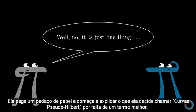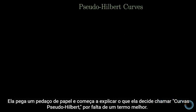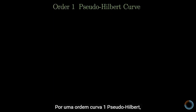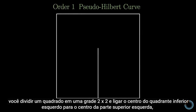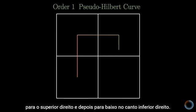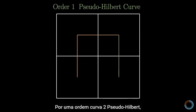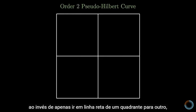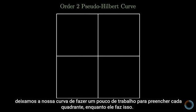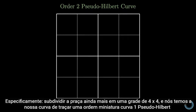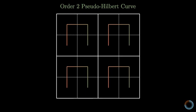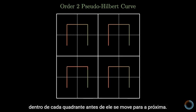She pulls out a piece of paper and starts explaining what she decides to call pseudo-Hilbert curves, for lack of a better term. For an order one pseudo-Hilbert curve, you divide a square into a two-by-two grid and connect the center of the lower left quadrant to the center of the upper left, over to the upper right, and then down to the lower right. For an order two pseudo-Hilbert curve, rather than just going straight from one quadrant to another, we let our curve do a little work to fill out each quadrant while it does so. Specifically, subdivide the square further into a four-by-four grid, and have our curve trace out a miniature order one pseudo-Hilbert curve inside each quadrant before it moves on to the next.